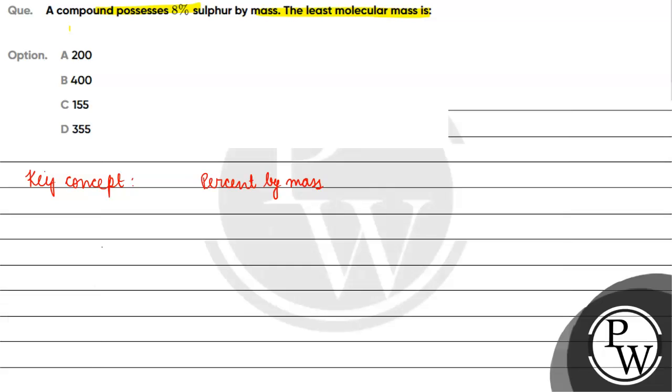Percent by mass of an element is basically equal to mass of that element divided by mass of compound, multiplied by 100.